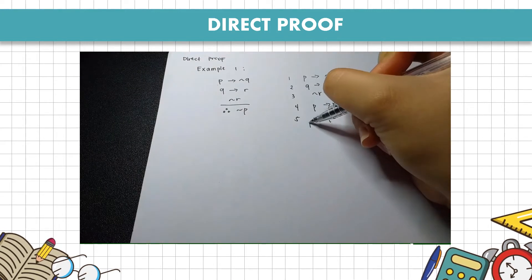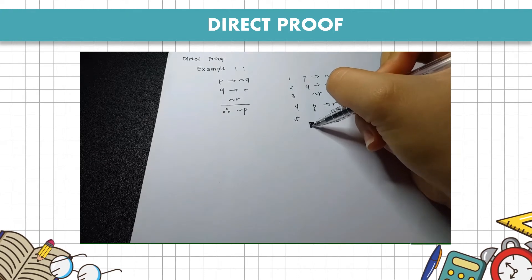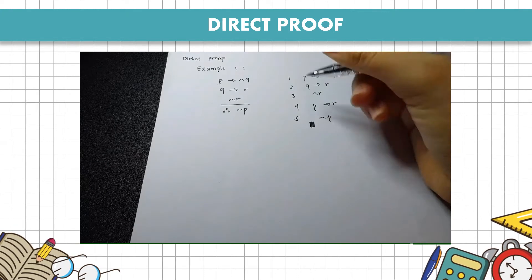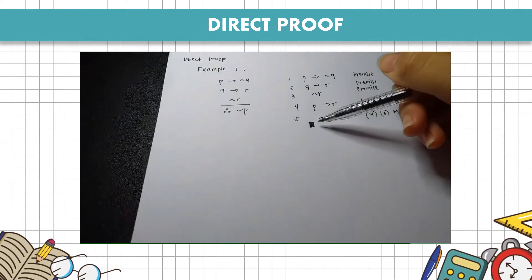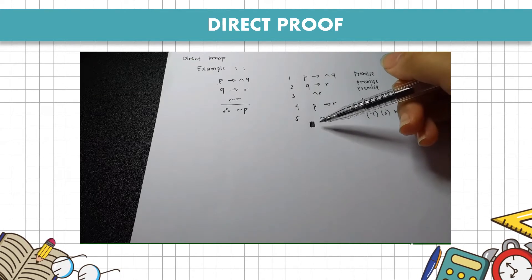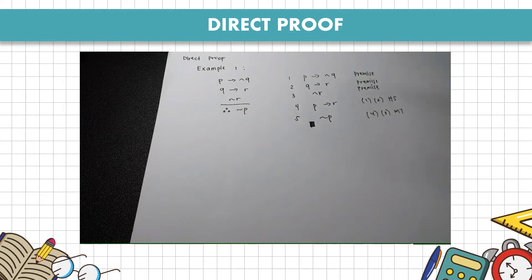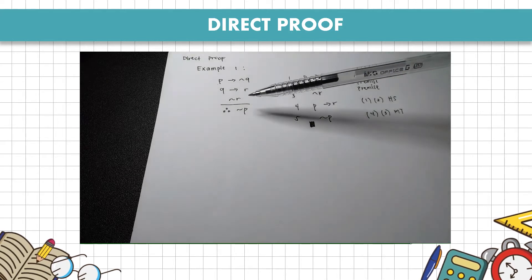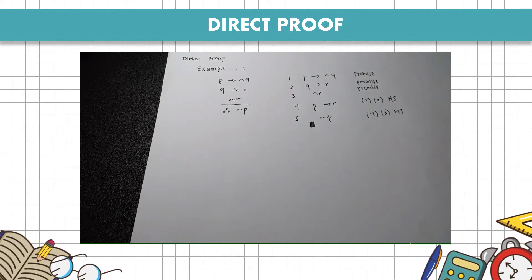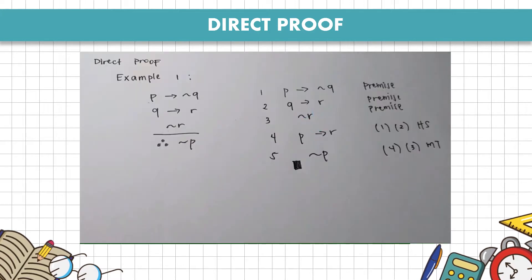We then place a shaded box or square, which means we have finished the proof — we have proven that the conclusion is valid and true. That concludes example number 1.